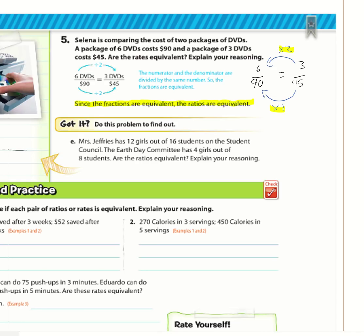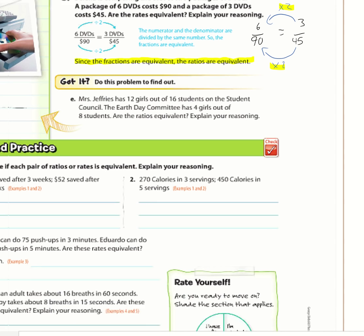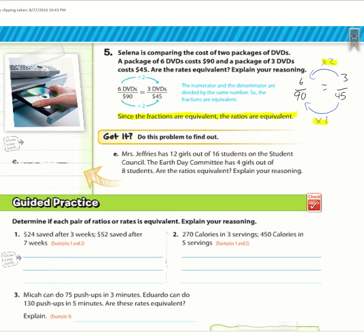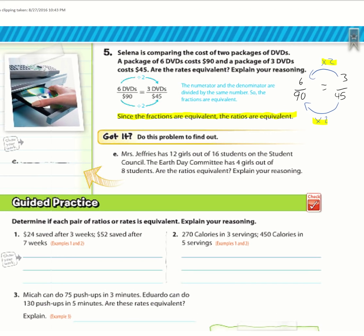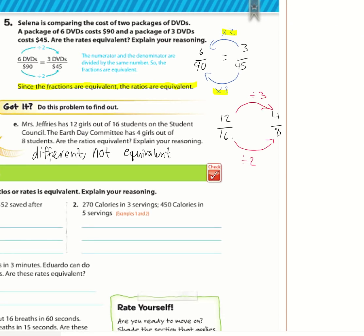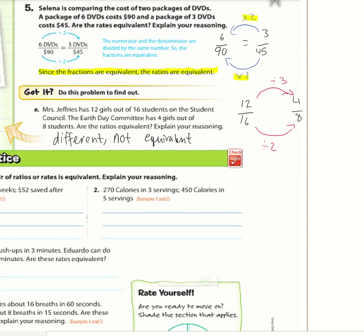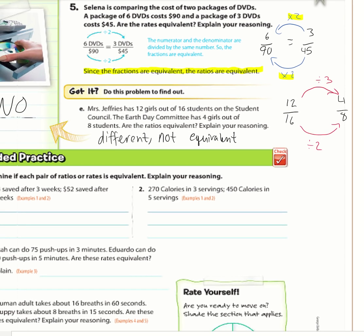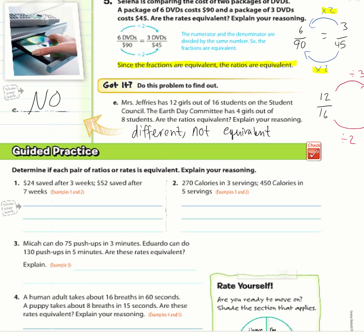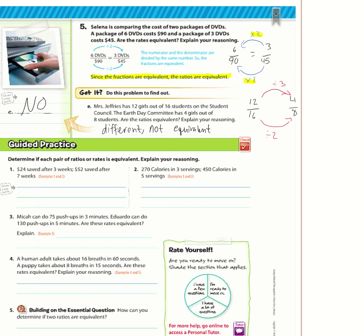You can make the fractions the same or find unit rates — either way you get the same answer. For E: 12 out of 16 girls and 4 out of 8 girls. 12 divided by 3 equals 4, but 16 divided by 2 equals 8 — since 3 and 2 are different, they are not equivalent. That's the end of the video, thank you for watching.